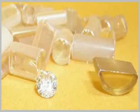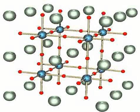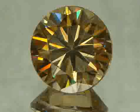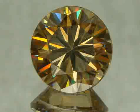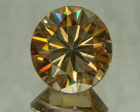Beginning around 1955, large quantities of strontium titanate were manufactured for this sole purpose. Strontium titanate was in competition with synthetic rutile — titania — at the time, and had the advantage of lacking the unfortunate yellow tinge and strong birefringence inherent to the latter material. While it was softer, it was significantly closer to diamond in likeness.